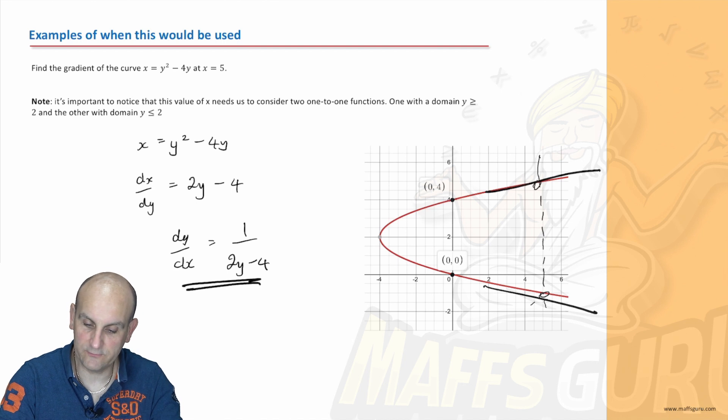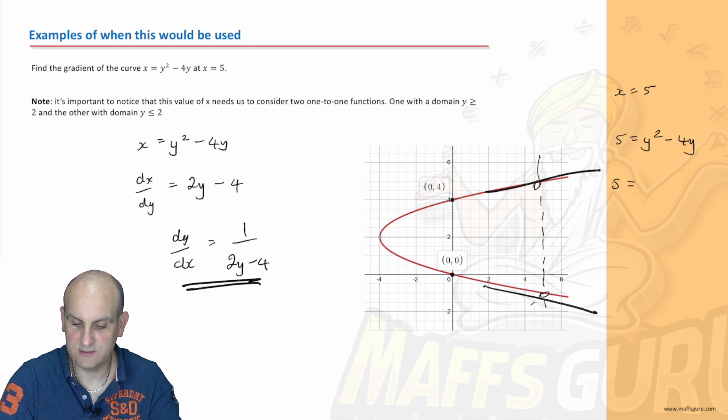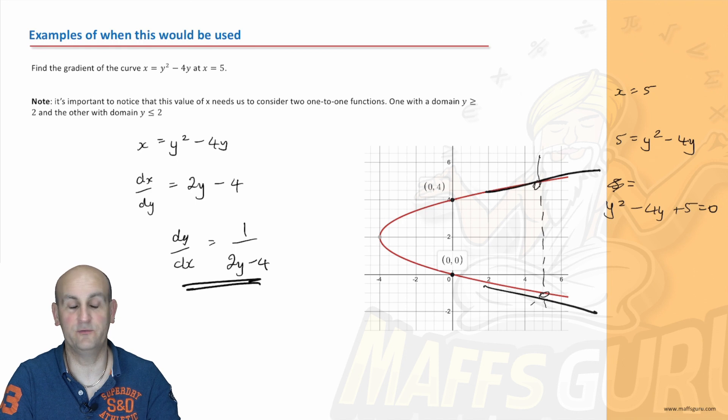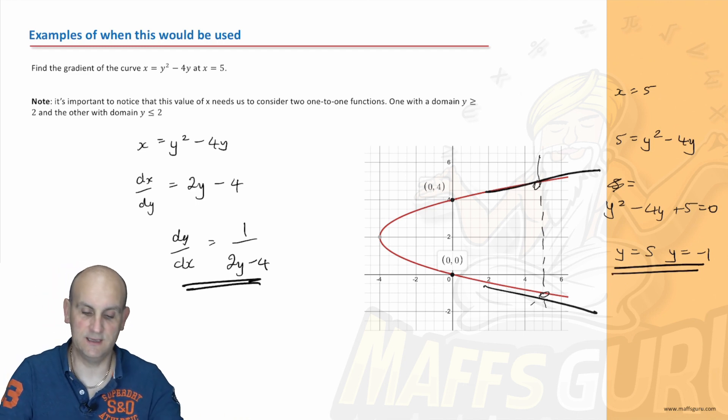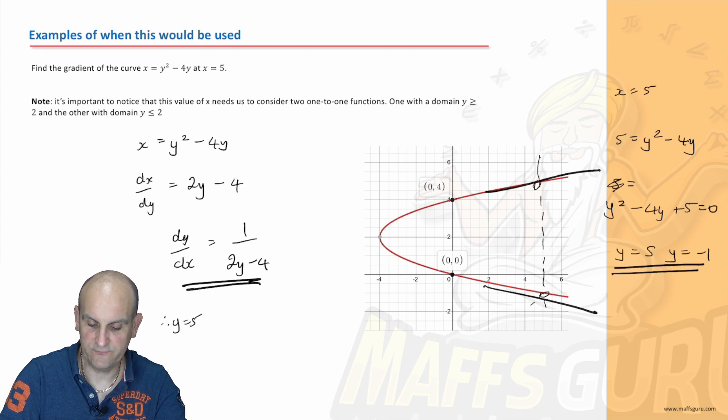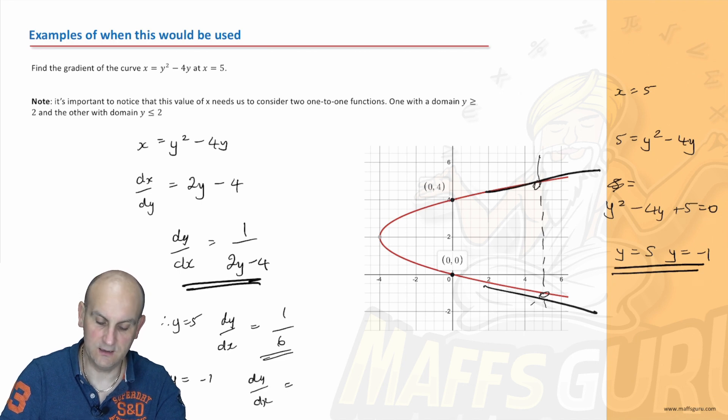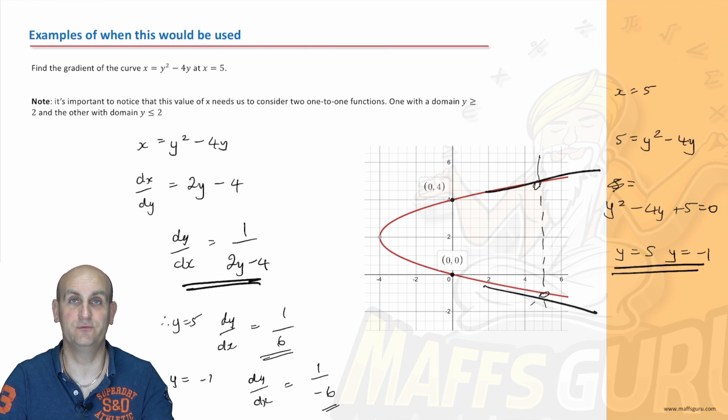So when x equals 5, what do we get? So when x is equal to 5, I get 5 is equal to y squared minus 4y. So y squared minus 4y plus 5 equals 0. And fast forwarding this, I'm going to get the values of y as 5 or negative 1. So those are my two y values I'm now going to test. Put those in there. So therefore, when y is equal to 5, what am I going to get? I'm going to get dy by dx is equal to 1 on 2 times 5, 10 minus 4 is 6. And when y is equal to negative 1, my dy by dx gives me negative 1 is negative 2, negative 4, 1 on negative 6. Ka-ching. So again, drawing a sketch of these things could be quite beneficial to know how many differentials you are looking for, how many gradients you are looking for.